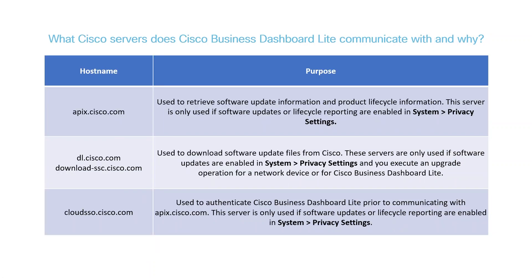The app communicates with several Cisco servers for various purposes. Apix.cisco.com is used to retrieve software update information and product lifecycle details. dl.cisco.com and downloadssc.cisco.com are used for downloading software updates. cloudss1.cisco.com is used to authenticate CBD Lite before it communicates with apix.cisco.com.